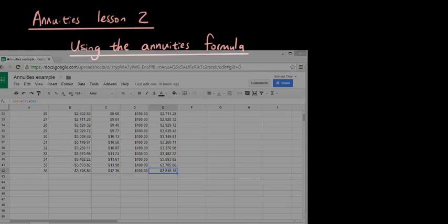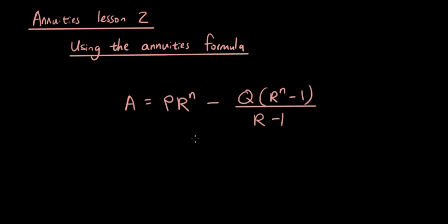So here is the annuities formula and it might look a little bit long to you but after I have explained what each of the variables mean it's actually quite a quick calculation. So I'll explain what it all means, I'll show you how to use it and then I'm going to leave the proof of the formula to the next lesson.